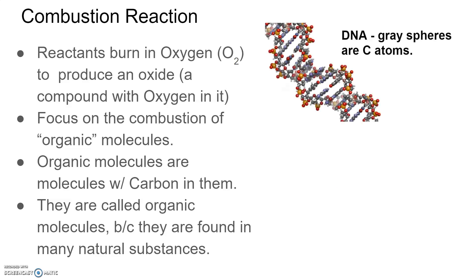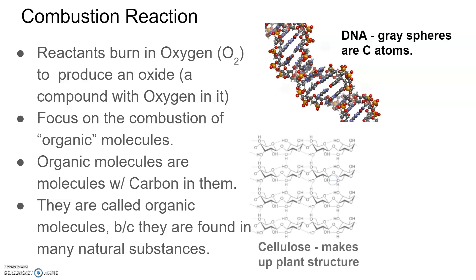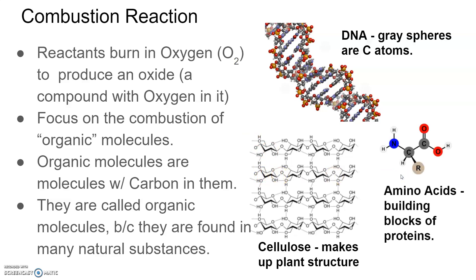Molecules with carbons in them are called organic because they're often found in many natural substances. Here are a couple of examples, like DNA. If you look at this model of DNA, all the grayish spheres represent carbon atoms, so DNA is made up of carbon. Cellulose, which is the structure that makes up plants — all of these corners with no atoms written on them are all carbon. And then amino acids, which are the building blocks of proteins, also contain carbons. So we're going to focus on the combustion of organic molecules, which are just molecules with carbons in them.